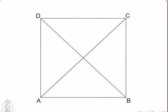Consider the given square ABCD. Now we'll draw the diagonals AC and BD intersecting each other at O.